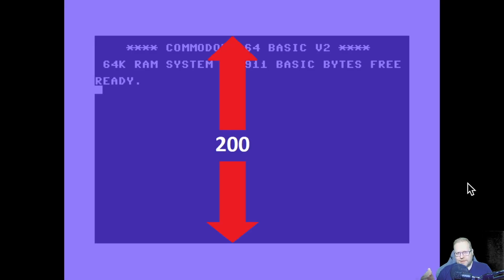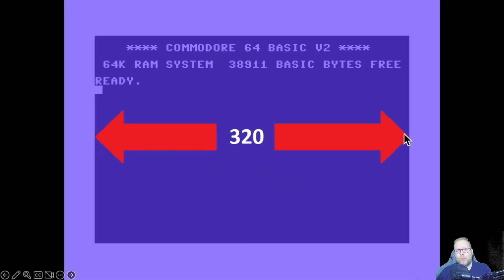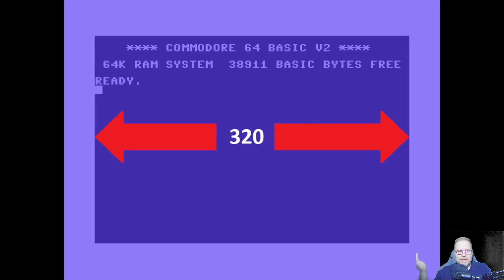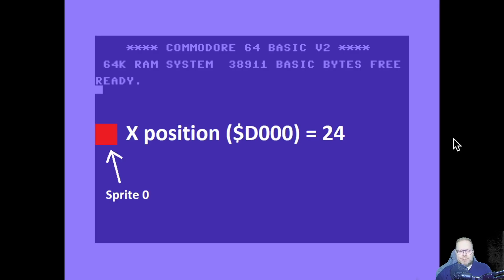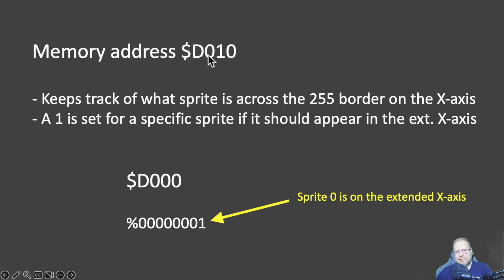The Commodore 64 screen background area is 200 pixels tall and 320 pixels wide. This is the problem: we can't put a number like 320 into a byte — it doesn't work because it's way over 255. So if we want to move a sprite over here, we can't say we want the X-axis to be 300. Also, remember that the sprite X-position starts at 24, in D000 for sprite 0. Anyway, we have something called memory address D010.